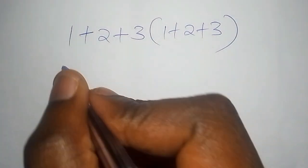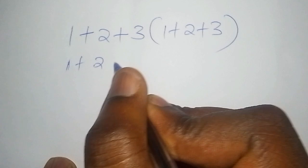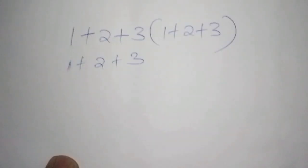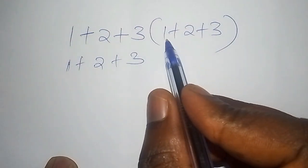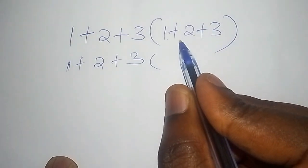So their first step was 1 + 2 + 3. Then from there they worked out the number inside the bracket, that is (1 + 2 + 3) is 6.